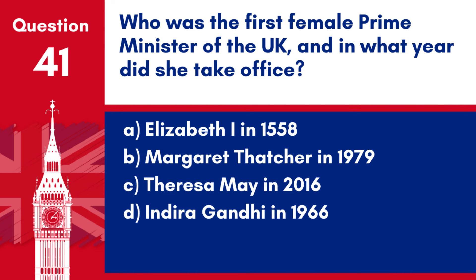Question 41. Who was the first female Prime Minister of the UK, and in what year did she take office? a. Elizabeth I in 1558. b. Margaret Thatcher in 1979. c. Theresa May in 2016. d. Indira Gandhi in 1966. Answer: b. Margaret Thatcher became the first female Prime Minister of the United Kingdom in 1979, serving until 1990.